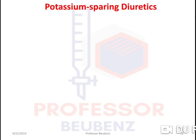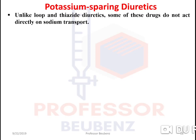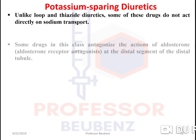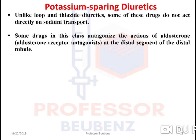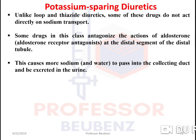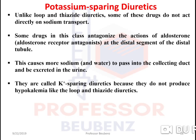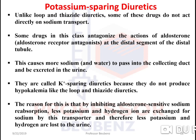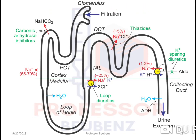Potassium-sparing diuretics: unlike loop and thiazide diuretics, some of these drugs do not act directly on sodium transport. Some drugs in this class antagonize the action of aldosterone — acting as aldosterone receptor antagonists at the distal segment of the distal tubule. This causes more sodium and water to pass into the collecting duct and be excreted in the urine. They are called potassium-sparing because they do not produce hypokalemia. By inhibiting aldosterone-sensitive sodium reabsorption, less potassium and hydrogen ion are exchanged for sodium, so less potassium and hydrogen ion are lost to the urine.